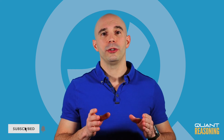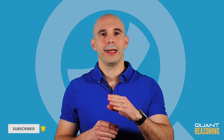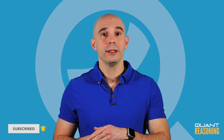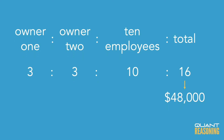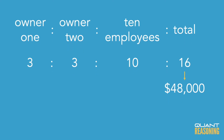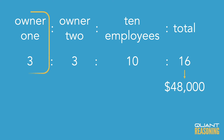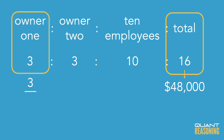The other approach we could use — once we have the ratio of 3 to 3 to 10, totaling 16 — is we can say an owner gets three ratio units out of a total of 16 ratio units. In other words, an owner gets 3/16ths of the $48,000.